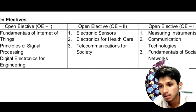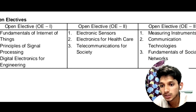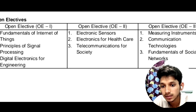Now let's see the syllabus of the open electives. In Open Elective One there will be three subjects: Fundamentals of IOT, Principles of Signal Processing, and Digital Electronics for Engineering. In Open Elective Two the subjects will be: Electronic Sensors, Electronics for Healthcare, and Telecommunications for Society. In Open Elective Three there are three subjects: Measuring Instruments, Communication Technologies, and Fundamentals of Social Networks.